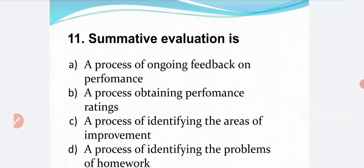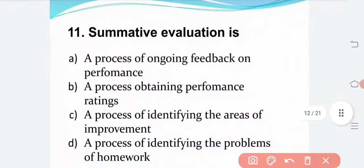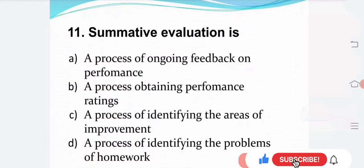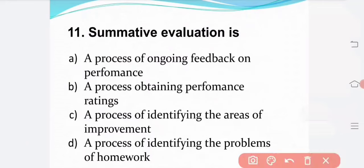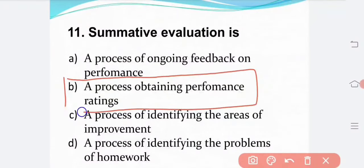Summative evaluation is: Option A — a process of ongoing feedback on performance. Option B — a process of obtaining performance ratings. Option C — a process of identifying the areas of improvement. Option D — a process of identifying the problems of homework. The correct answer is Option B: a process of obtaining performance ratings.